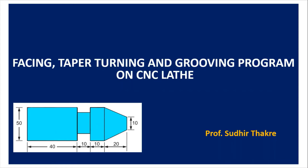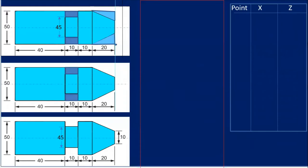Here this is the job which has to be performed. We have to prepare a program to machine the workpiece as shown in the figure on this CNC lathe. For that, first of all, before writing the programs we have to understand the various coordinate systems.